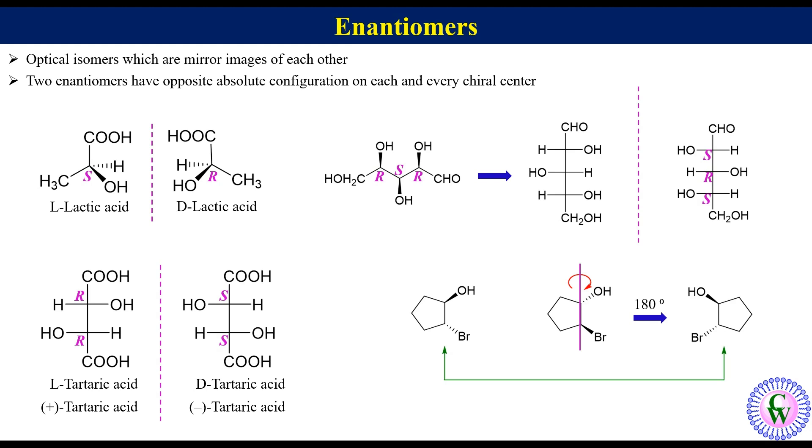If we talk about absolute configuration, the left side structure has R-R while the right one has S-S. Since they have opposite configurations, so they are enantiomers.